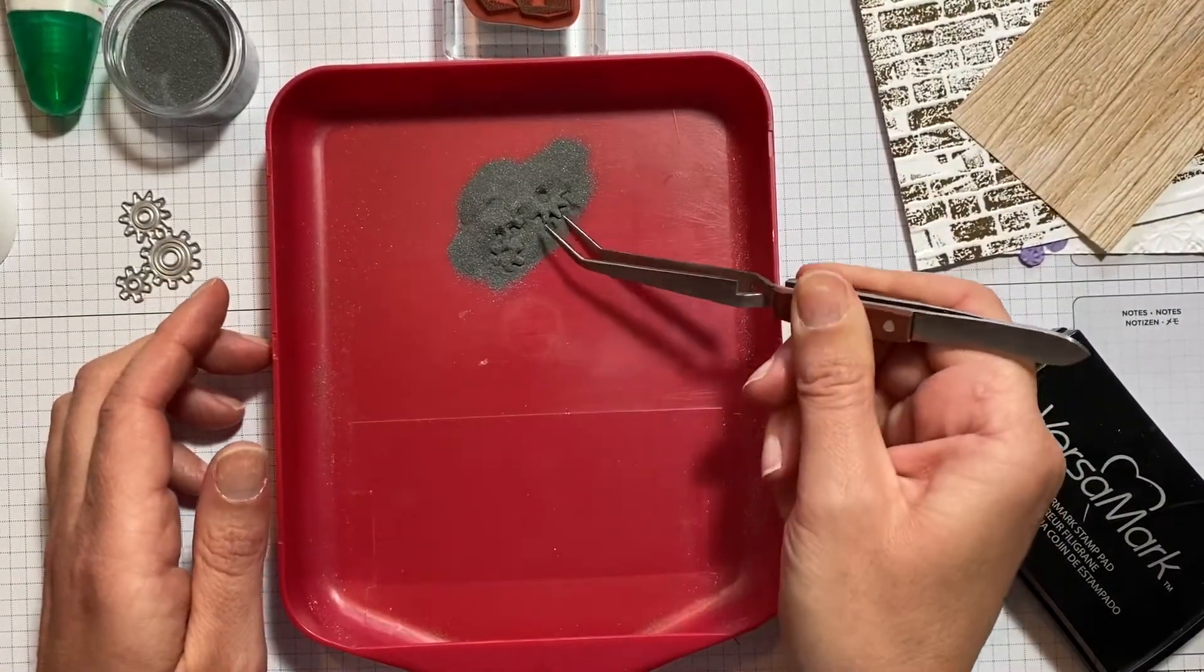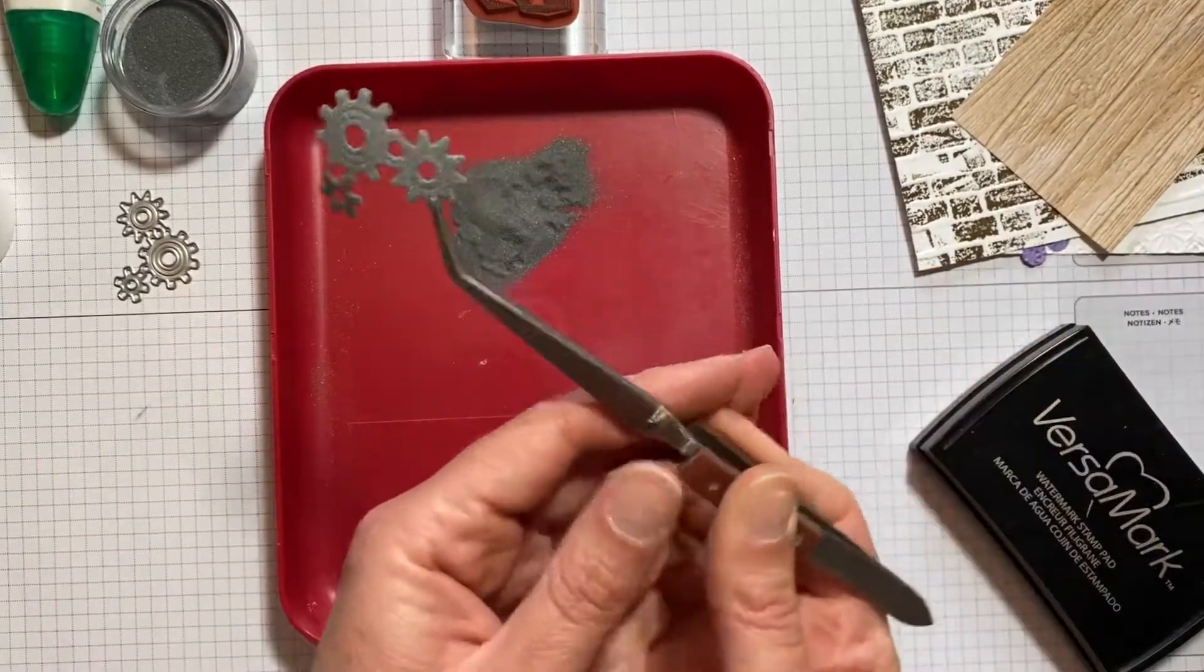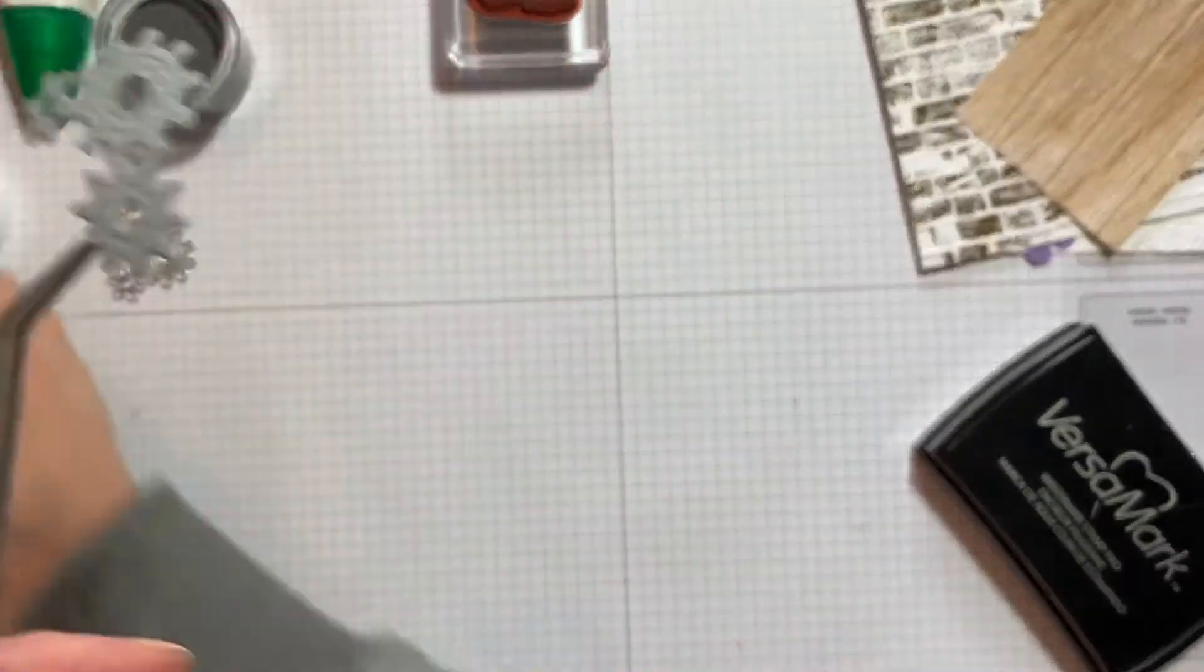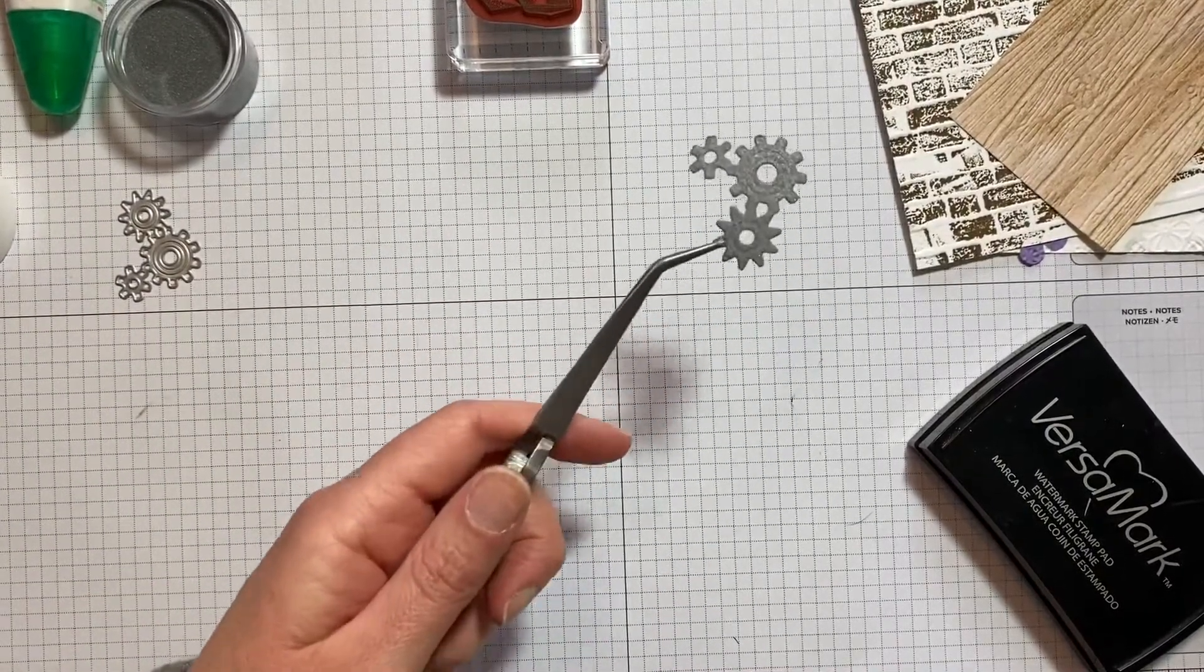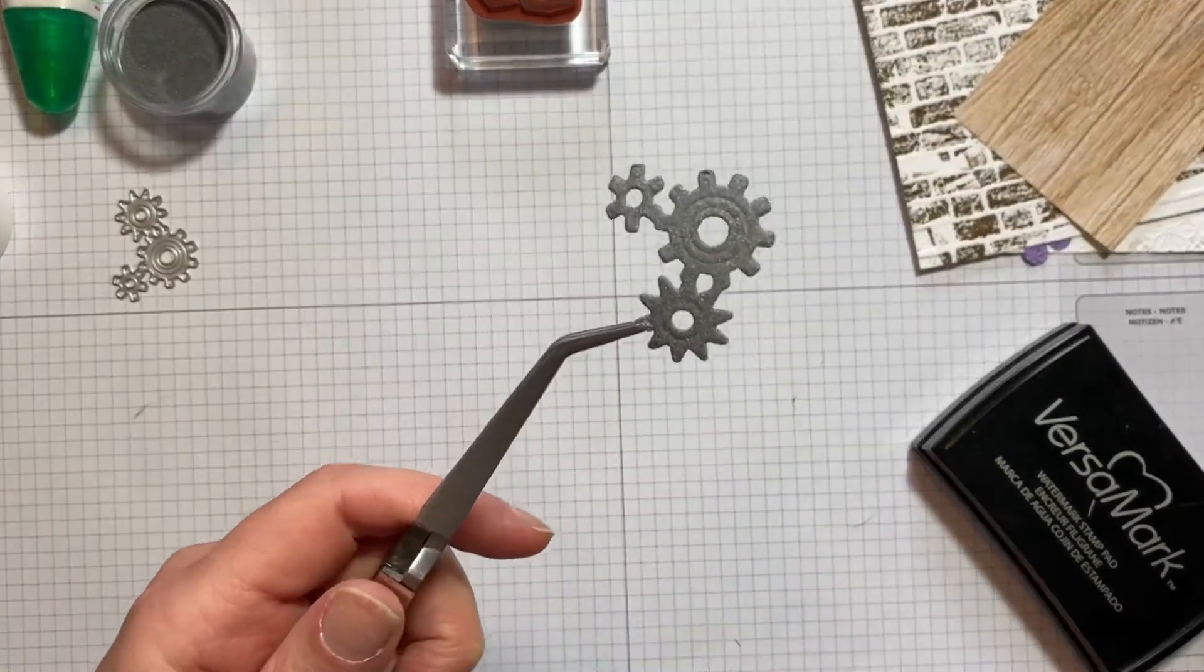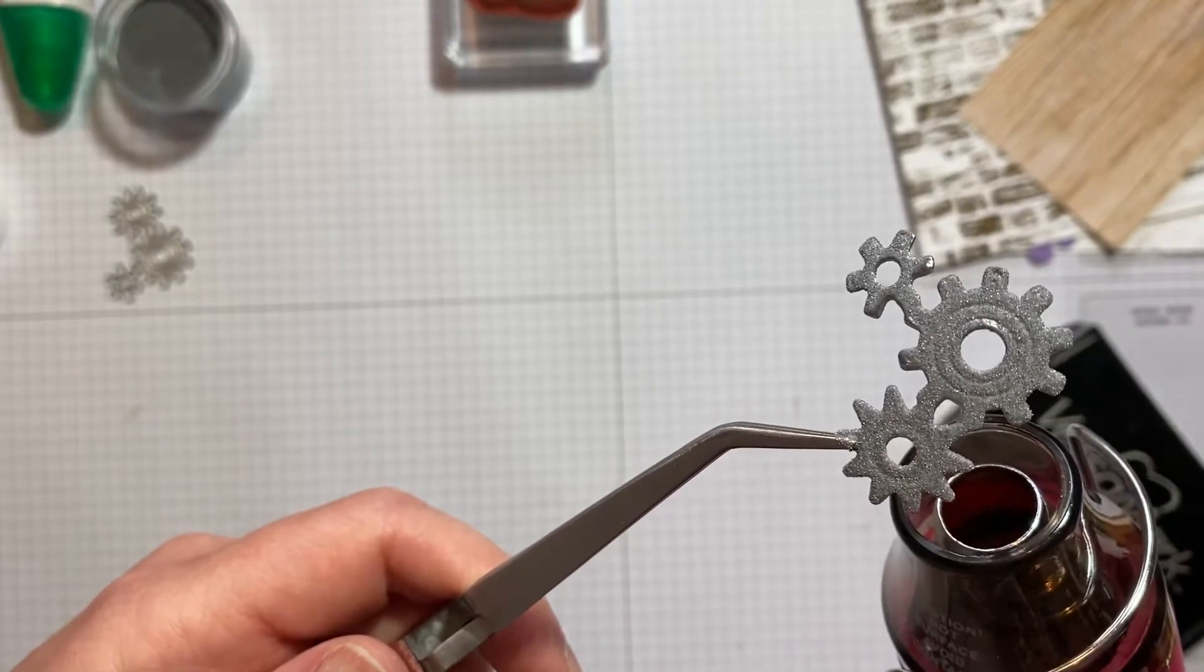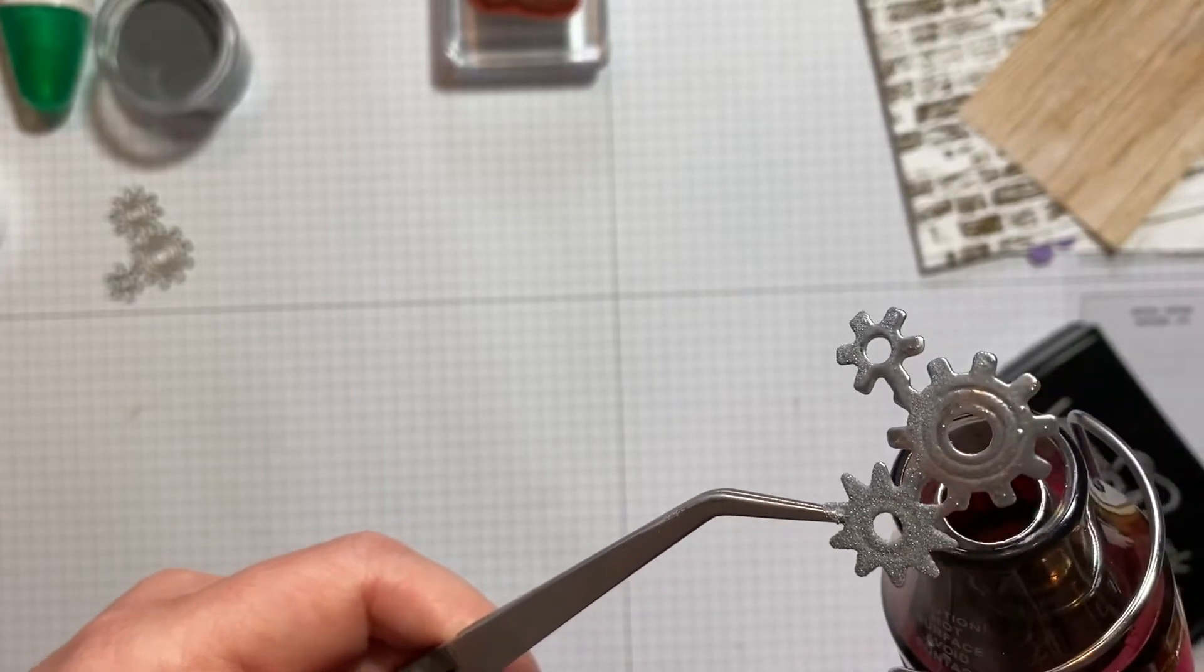And then with some tweezers, just bear in mind that where the tweezers are we might lose a bit of the powder, so if you've got a section that's going to hide under something else, that's perfect for that bit. I'm going to switch my heat tool on, I'm going to give it a couple of seconds just to warm up, and then I'm going to try to keep this in shot as I heat it. You can see it starting to turn, and as soon as you see it turn, move your heat gun.